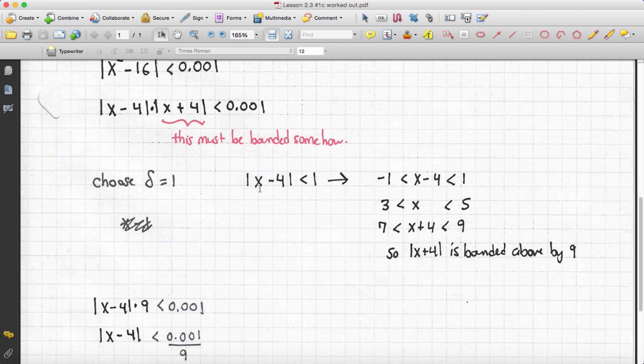Absolute value of x minus 4, that's 4 is our a, is less than 1. This implies that negative 1 is less than x minus 4 is less than 1. Now, I add 4 everywhere. 3 is less than x is less than 5.